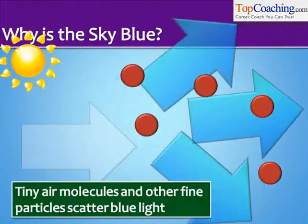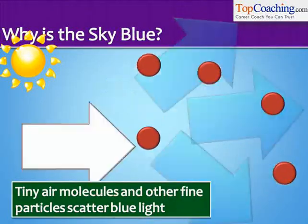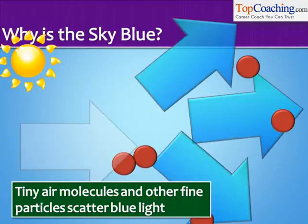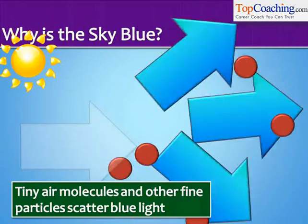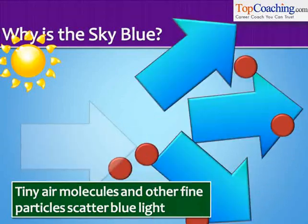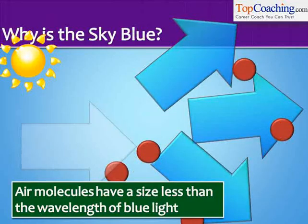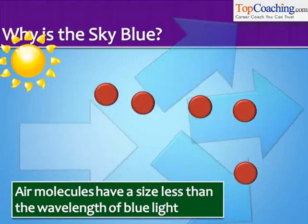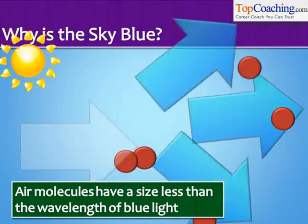Interestingly, if you go out of the Earth's atmosphere, the sky will not appear blue — the sky will become black. This is because the light will not be scattered. So this is a very important fact: the sky appears blue because of the atmosphere on Earth scattering blue light. Without atmosphere, there is no scattering and the sky is black.